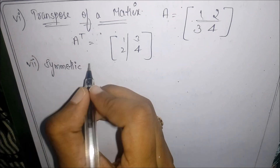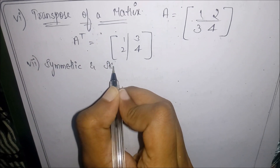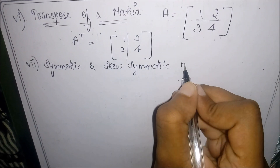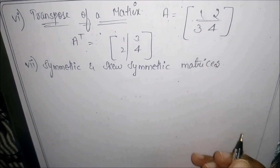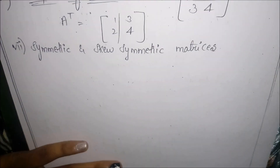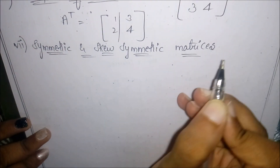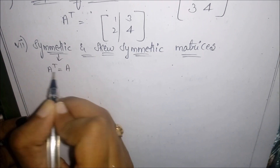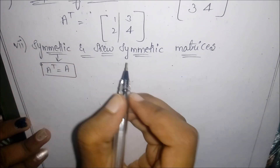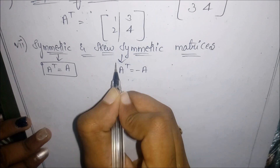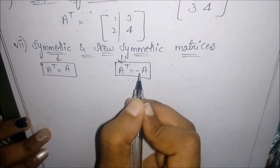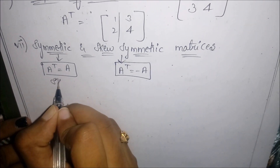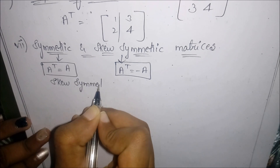The next topic is symmetric and skew-symmetric matrices. In a symmetric matrix, the transpose of a matrix is equal to the matrix itself, that is A transpose equals A. In a skew-symmetric matrix, A transpose is equal to the negative of the given matrix, that is A transpose equals minus A.